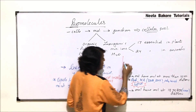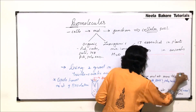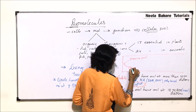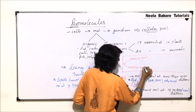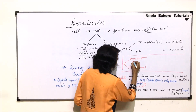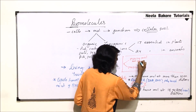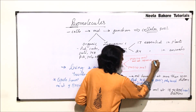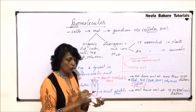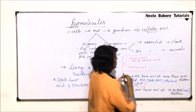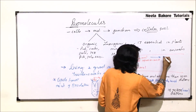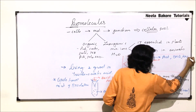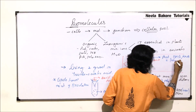Our classification on the basis of molecular weight gives us macromolecules — molecular weight 10,000 or more — and micromolecules. Macromolecules include proteins, DNA, RNA, and polysaccharides, and these are found in the acid-insoluble pool.